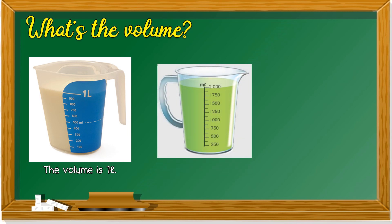How about this one? What's the volume of the green liquid? It's until here. So, the volume is 2000 milliliter, which is also 2 liter because 1,000 milliliter is 1 liter.